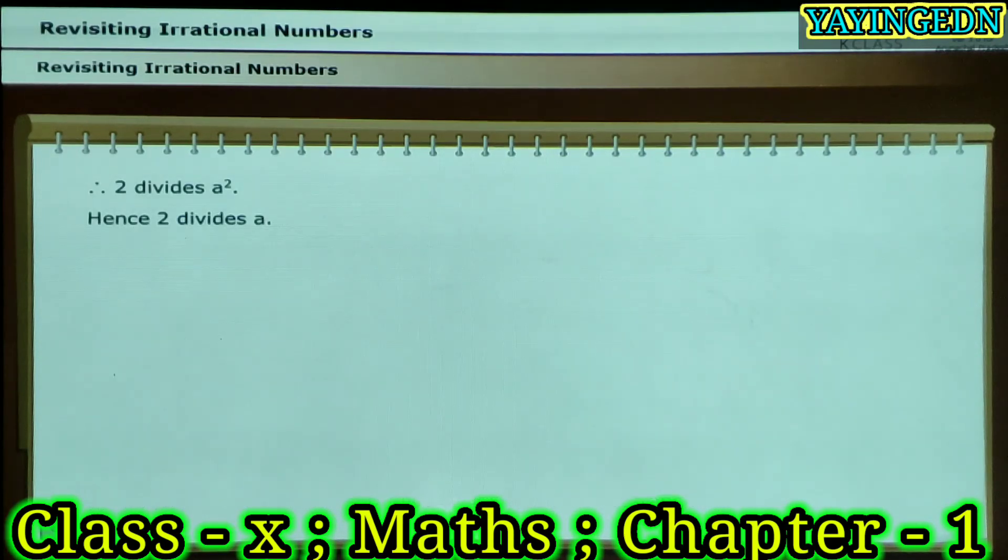Therefore, 2 divides A squared, and hence 2 divides A. We can thus write A is equal to 2C, for some integer C.